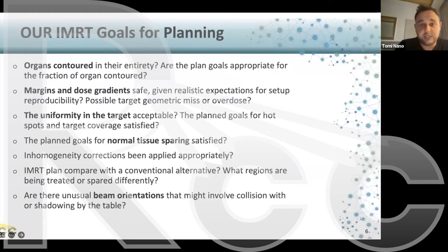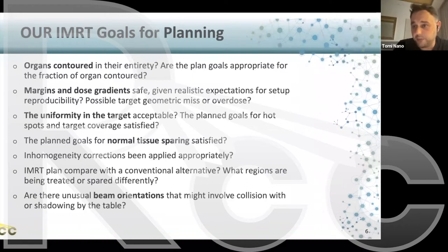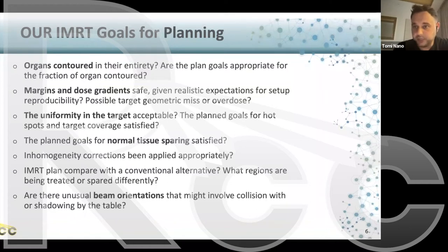IMRT — things that we need to consider. When we're looking at a plan, usually as a physicist reviewing a chart, it's very important to start with organs contoured in their entirety. A common missed contouring of an organ is, for example, a spinal cord that might be missing a contour on a particular CT slice. Spinal cord dose constraints are common point doses such as Dmax, and those values change as the contours are changed.